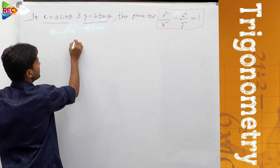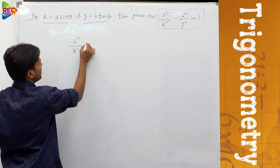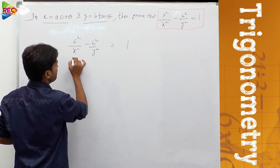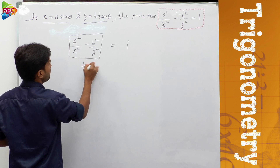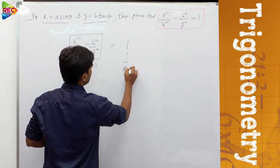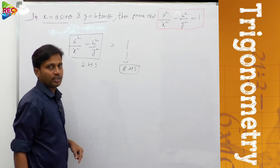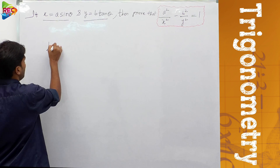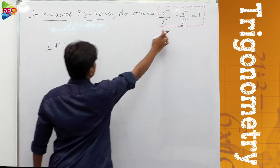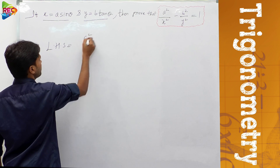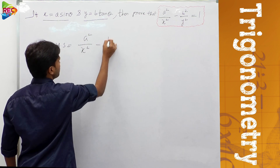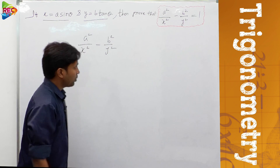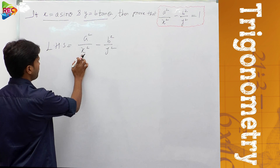We have a²/x² minus b²/y² and we need to show this value equals 1. This is the LHS part which is given, and 1 is the RHS part which we need to obtain. We consider LHS: LHS equals a²/x² minus b²/y².